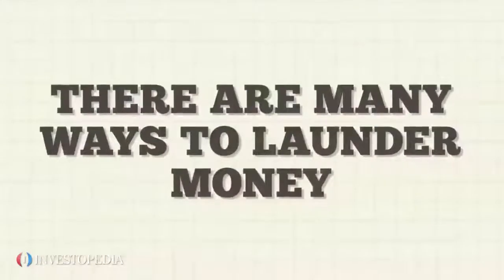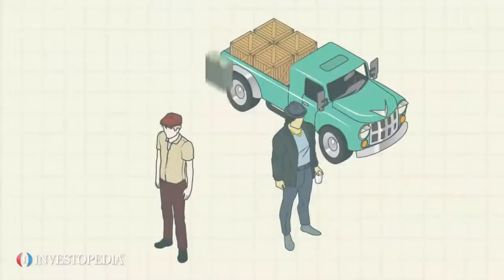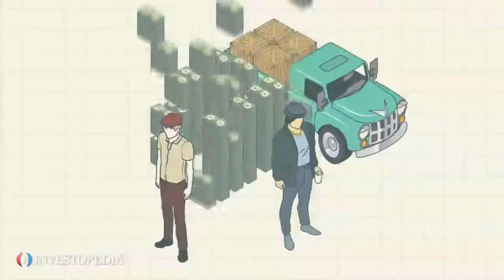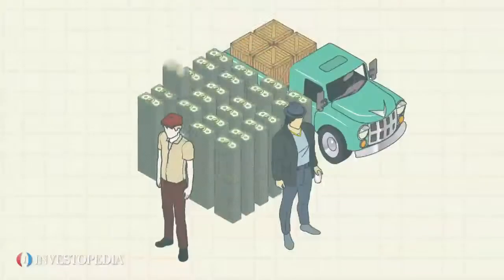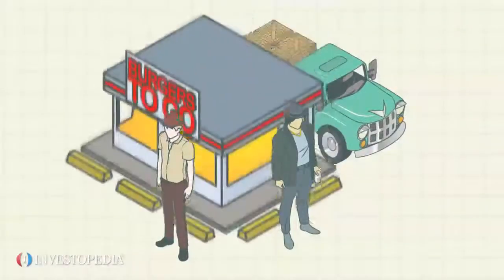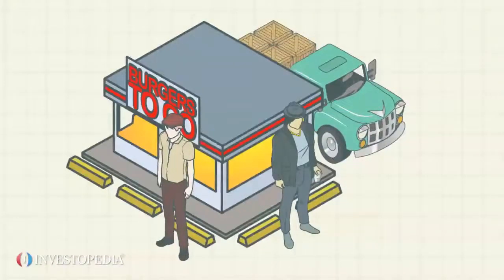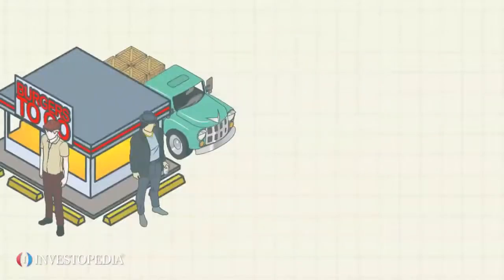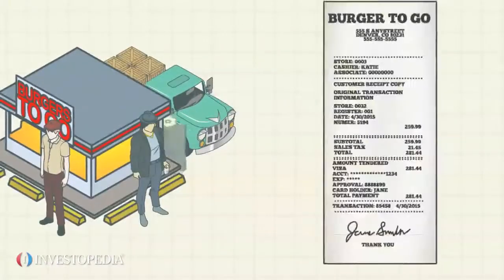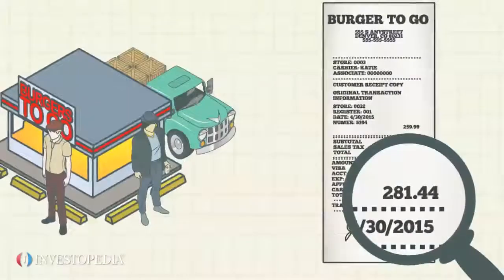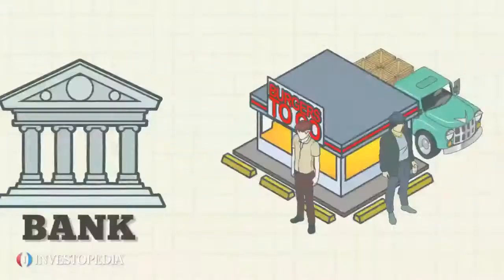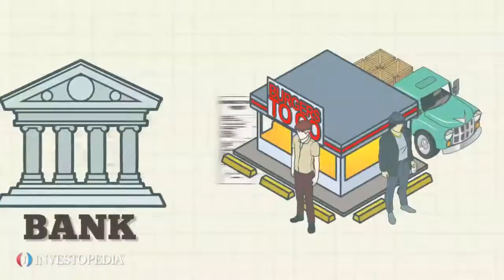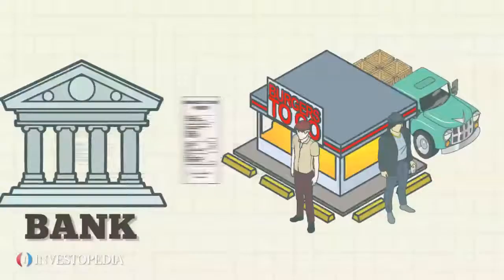There are many ways to launder money. One of the most common is to launder the money through a legitimate cash-based business owned by the criminal organization. For instance, if the organization owns a restaurant, it might inflate the daily cash receipts to funnel its illegal cash through the restaurant and into the bank.